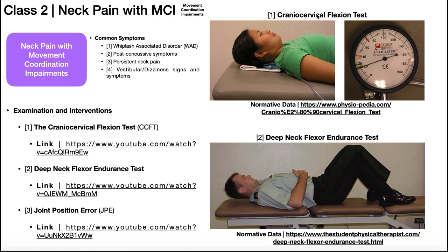This is really more like target training. You've got increments of 20, 22, 24, 26, 28, and all the way up to 30 on the gauge. The goal of the test is to hold a chin tuck specifically at 20 mmHg, then hold specifically at 22, then 24, 26, 28, and 30. So this is a progressive target training for the deep neck flexors.